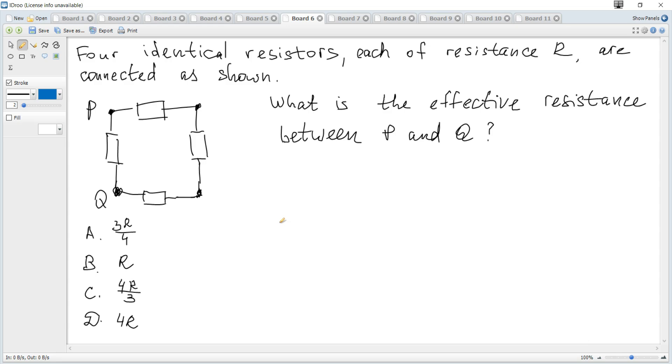Four identical resistors, each of resistance R, are connected as shown. What is the effective resistance between P and Q?